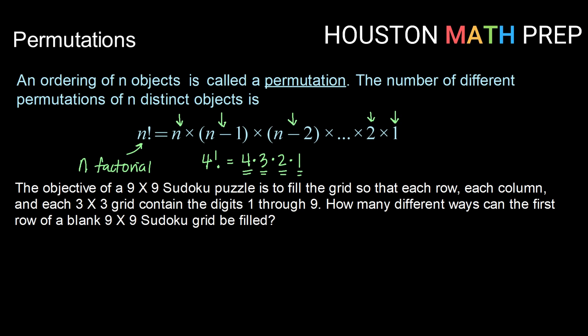So let's take an example. Let's say, if you haven't ever played a Sudoku puzzle before, the objective of a 9 by 9 Sudoku puzzle is to fill in the grid so that each row, each column, and each 3 by 3 grid contains the digits 1 through 9. Let's take just a piece of that. How many different ways can the first row of a blank Sudoku puzzle be filled in?